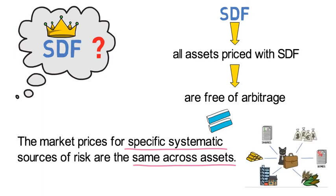For example, if inflation was a systematic risk factor, its priced-in market price would be the same in stocks, in bonds, commodities, and any other traded asset market.